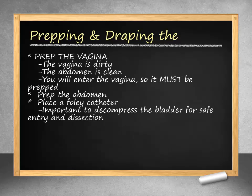Once we have positioned the patient we will need to prep the patient. The vagina should always be prepped when performing a hysterectomy, as the vagina is dirty and thus needs to be prepped. A Foley catheter should also be placed when performing an abdominal hysterectomy.